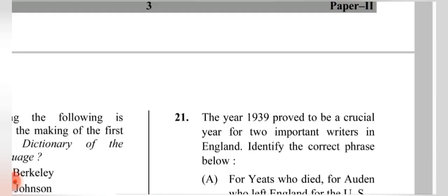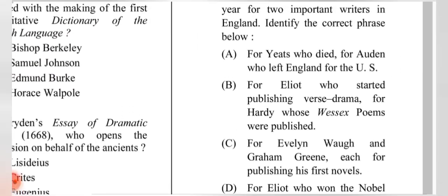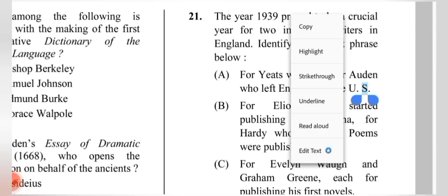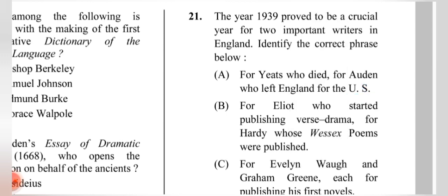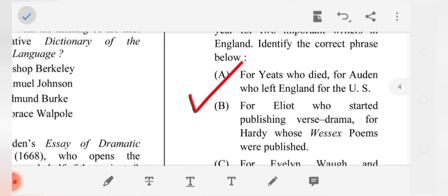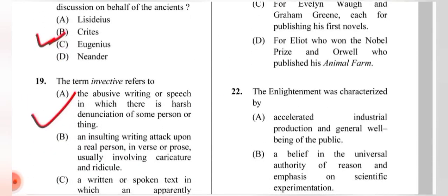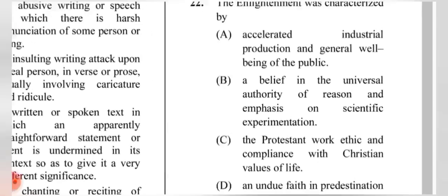Question 21: The year 1939 proved crucial for two important writers in England. The correct phrase is (A): W.B. Yeats died, and W.H. Auden left England for the US.